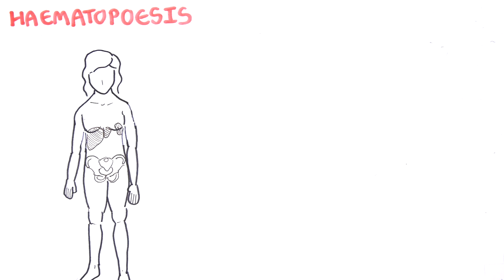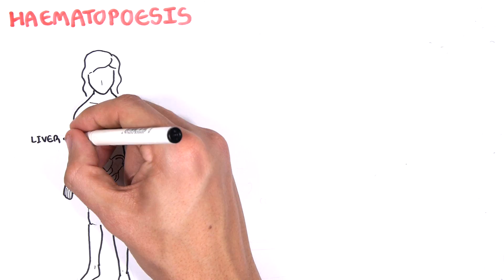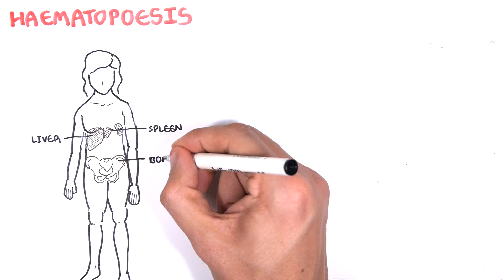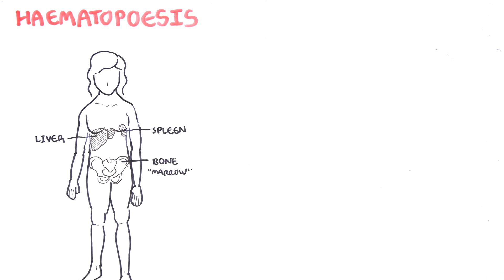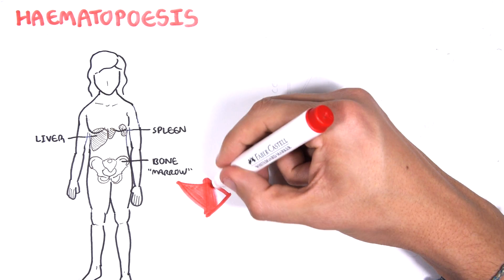This is referred to as medullary hematopoiesis. But hematopoiesis can also occur in other tissues such as the liver, thymus, and spleen, and this is called extramedullary hematopoiesis — and we'll learn about that in this video.